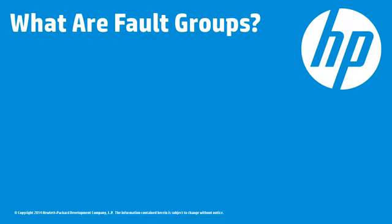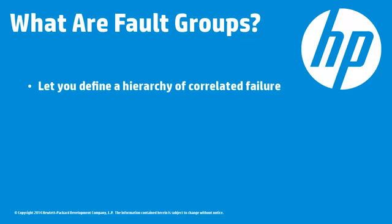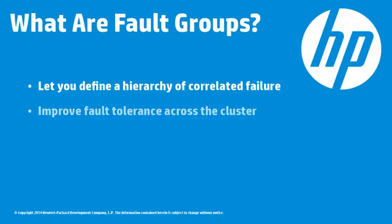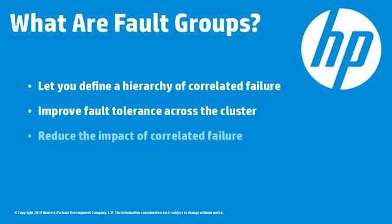HP Vertica uses information you provide about your cluster's physical layout to distribute data segments across the cluster so the database stays up in the event of a failure. This data distribution reduces the impact of correlated failures that might be unavoidable in your environment.